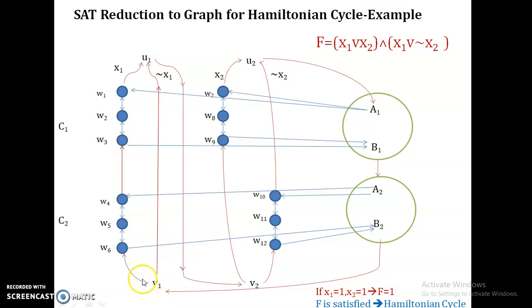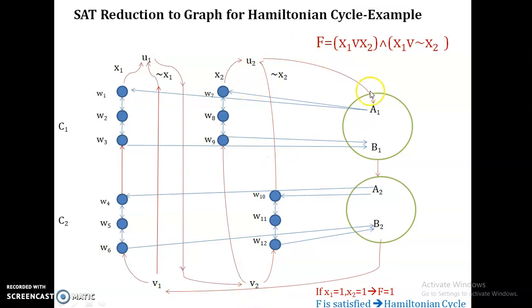From v1 draw edges to u1 through x1 and through x1-bar. Similarly introduce v2 and u2, connected through x2 and NOT x2. Connect u1 to v2, and v2 is connected to a1. Box 1 (a1-b1) represents class c1 and box 2 (a2-b2) represents class c2. From a1 the path goes through all literals in c1 and returns to b1; from b1 it connects to v1, which connects to a2, traverses c2's literals, reaches b2, and connects back to v1.